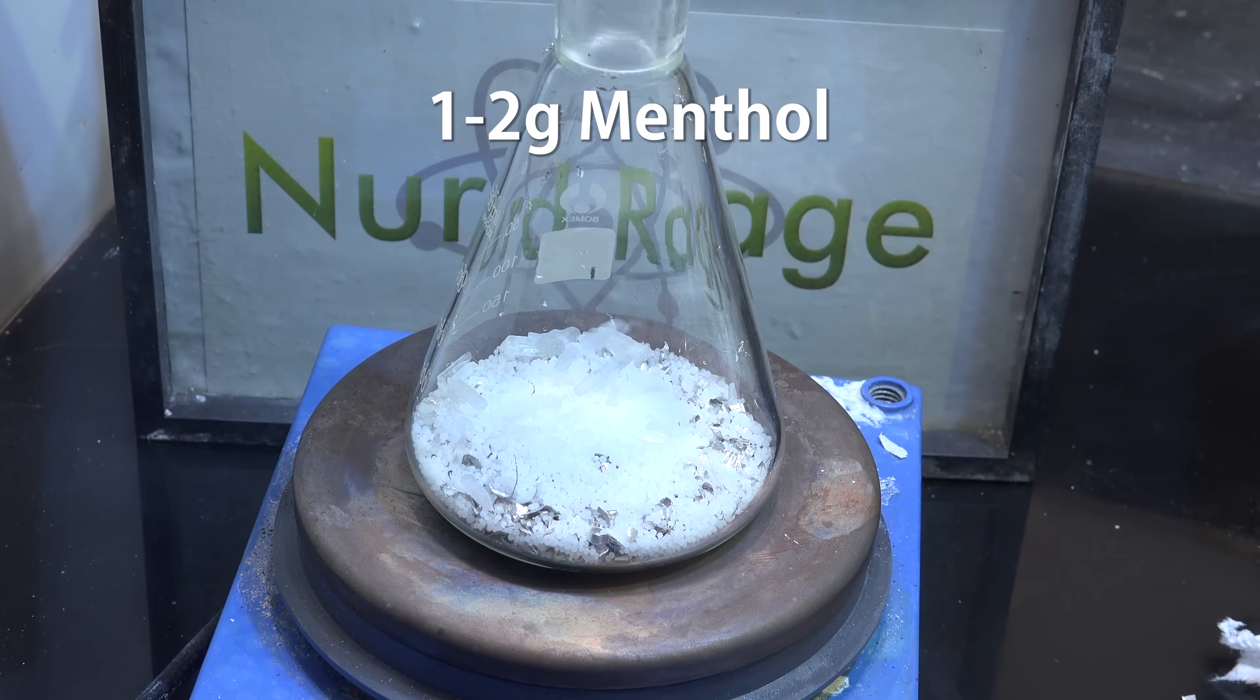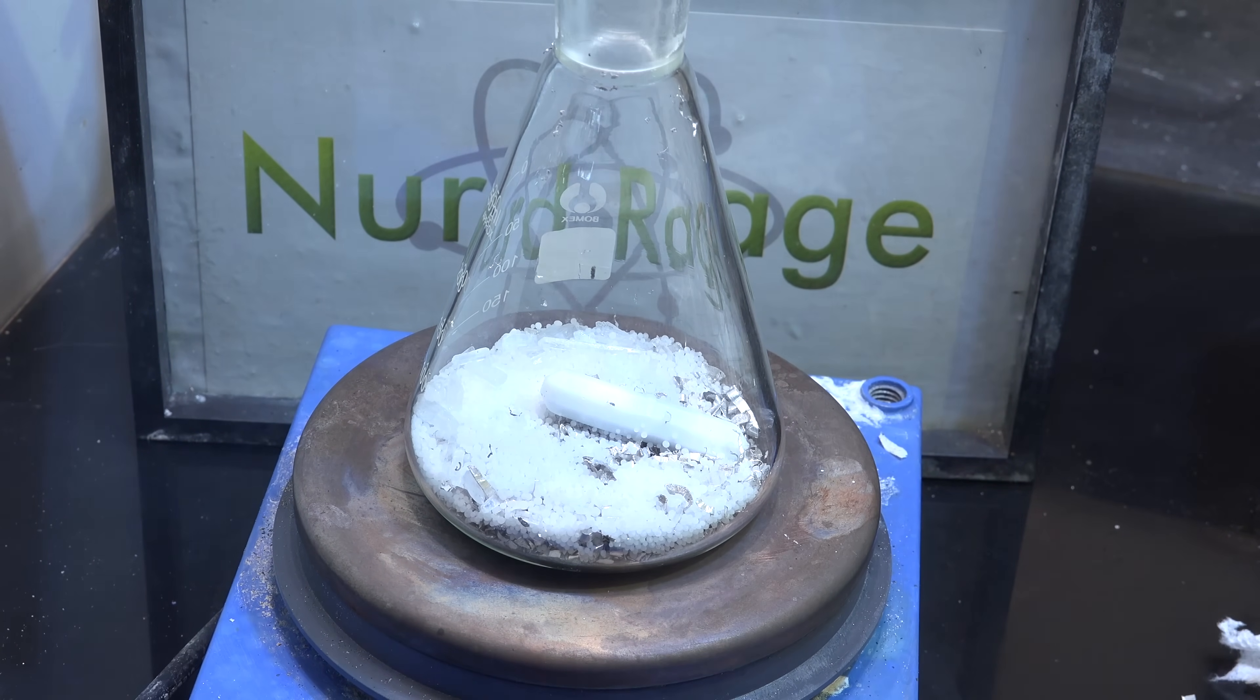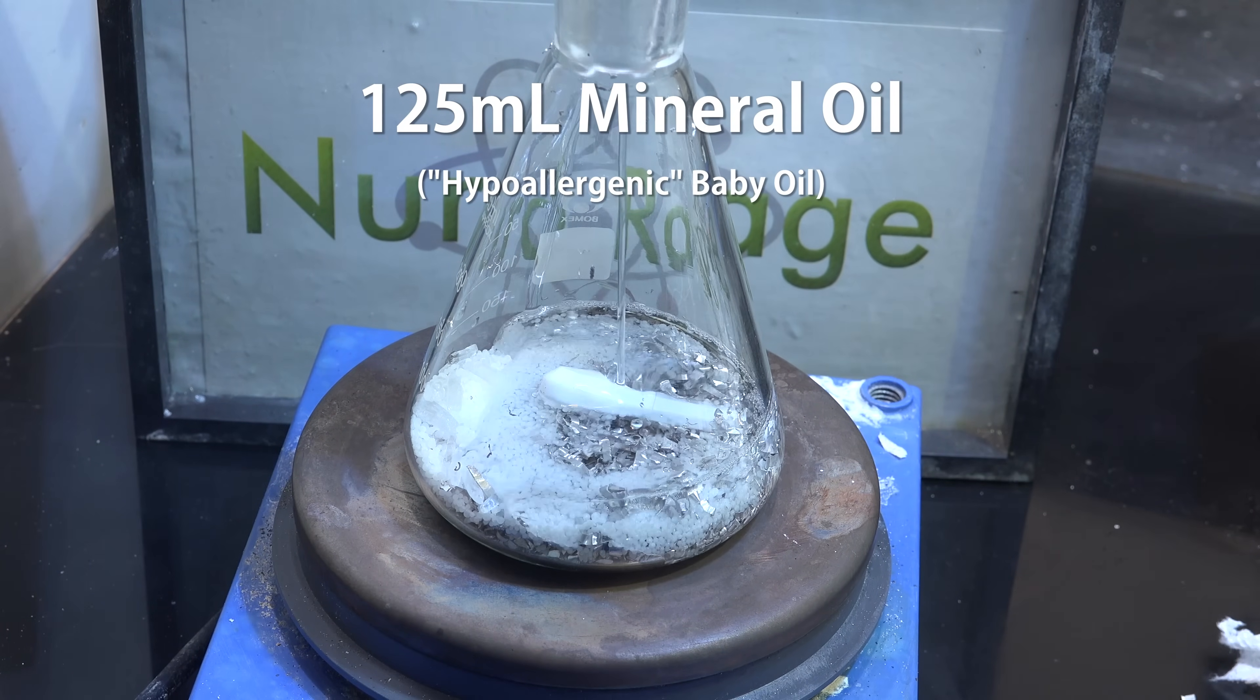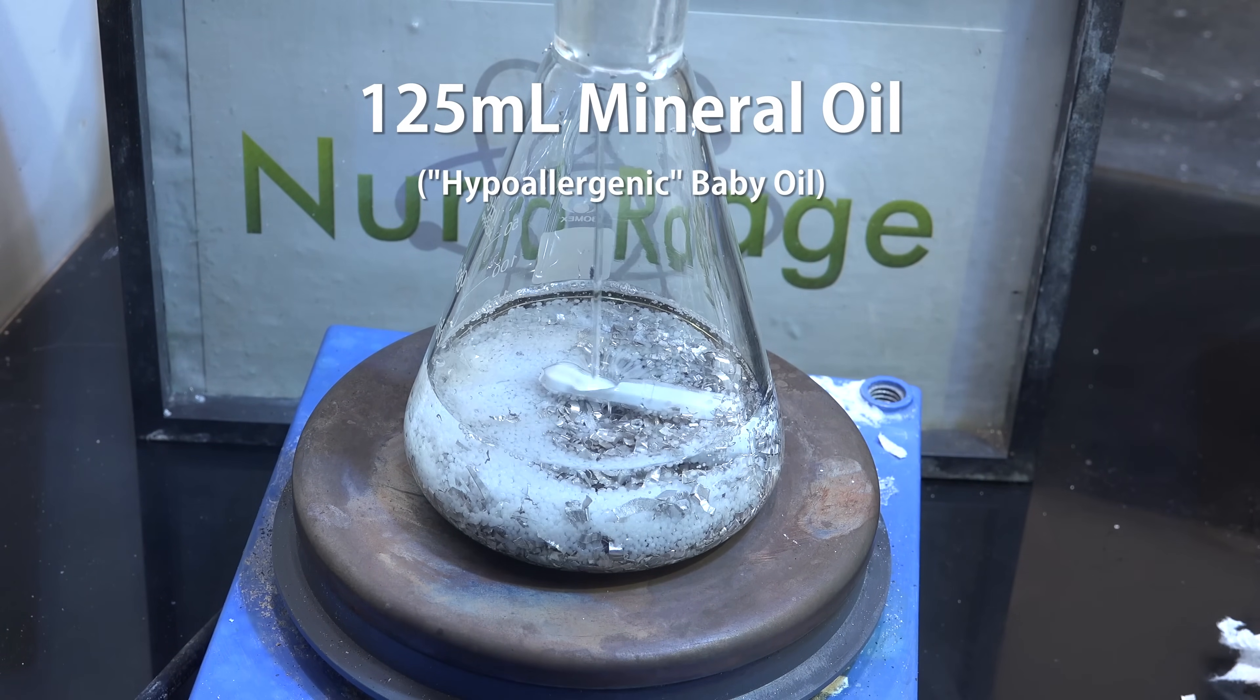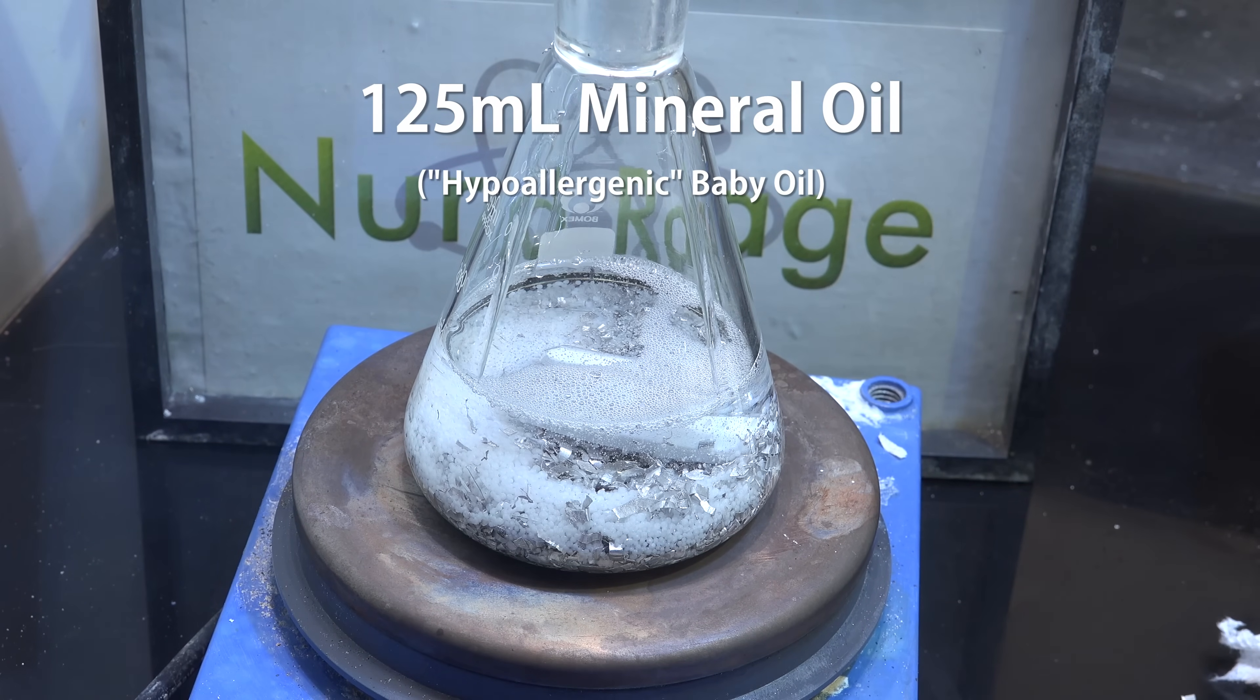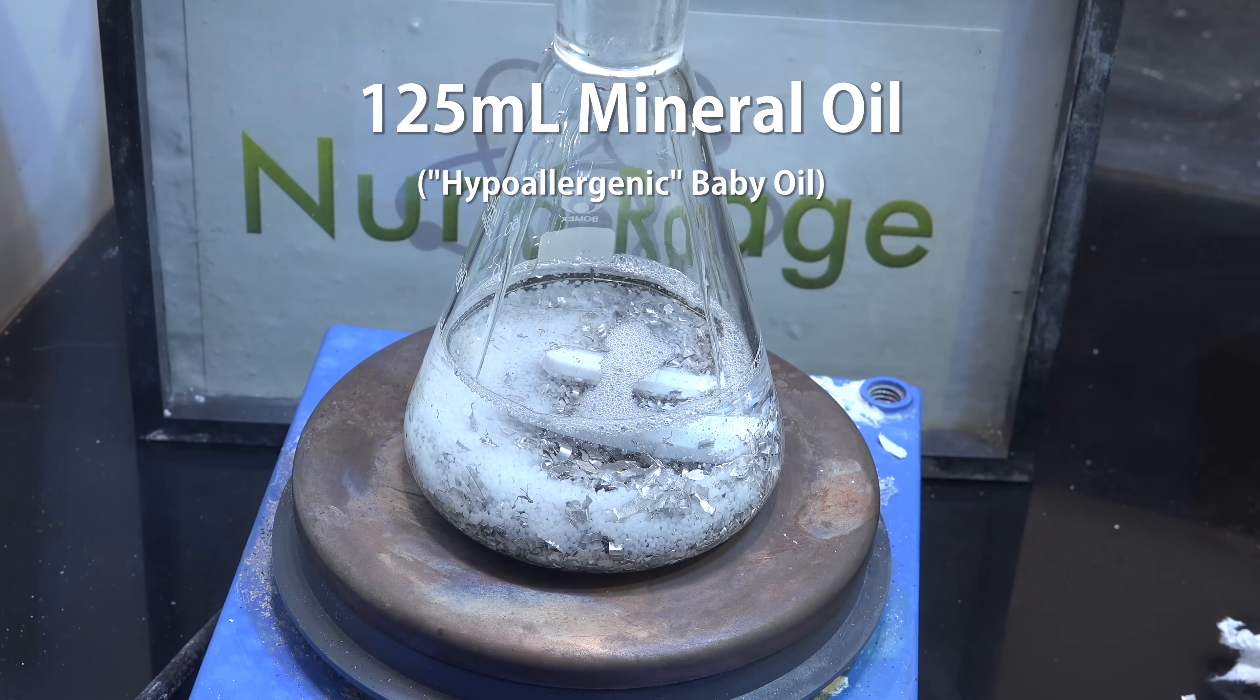Then we add in 1-2g of menthol crystals. These can easily be bought online. Let me drop in a magnetic stir bar. For the reaction solvent we add 125mL of hypoallergenic baby oil, which is essentially purified mineral oil. It's important to use a mineral oil that has no additives, so be sure to check the label.